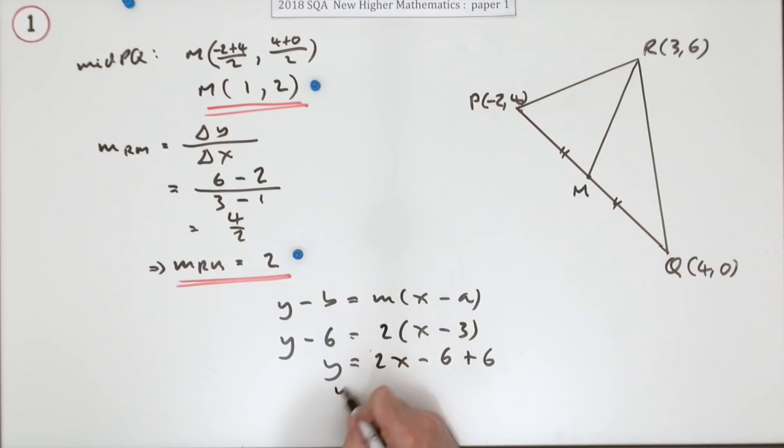Oh look, plus 6. So it just ends up as y equals 2x. Couldn't be nicer.